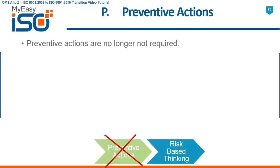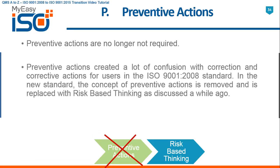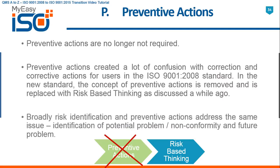P — Preventative actions are no longer required. Preventative actions created a lot of confusion with correction and corrective actions for users in the ISO 9001 2008 standard. In the new standard, the concept of preventive actions is removed and is replaced with risk-based thinking. Broadly, risk identification and preventive actions address the same issue — identification of potential problems, non-conformities, and future problems.